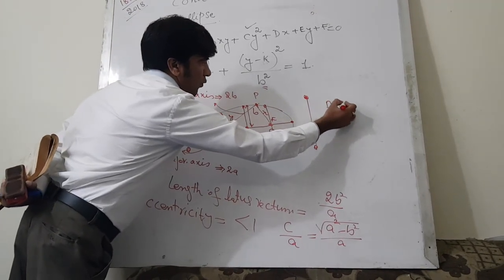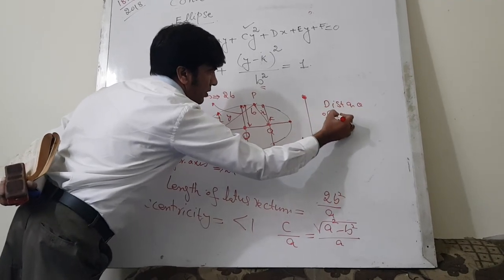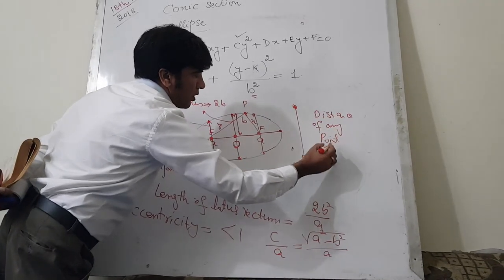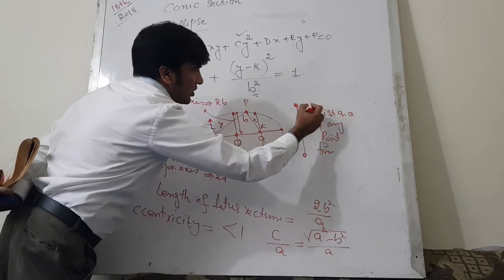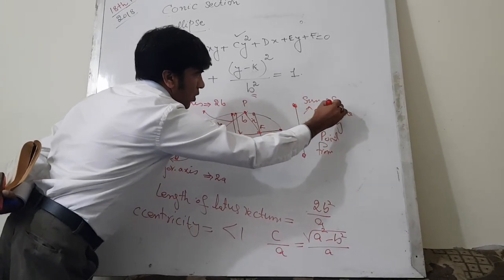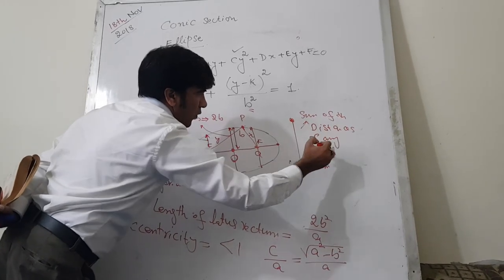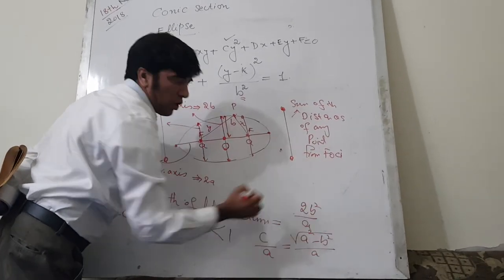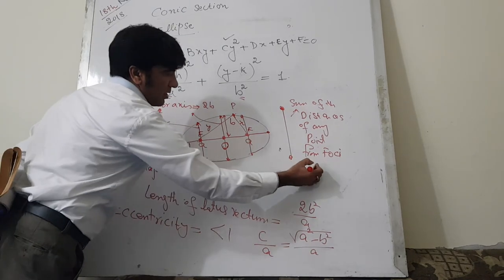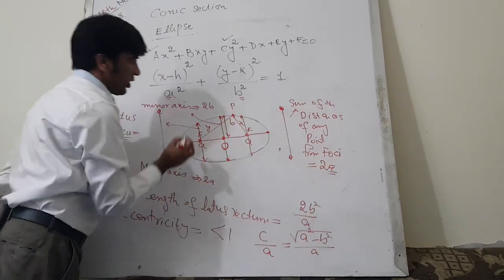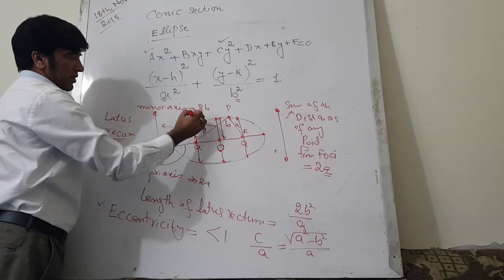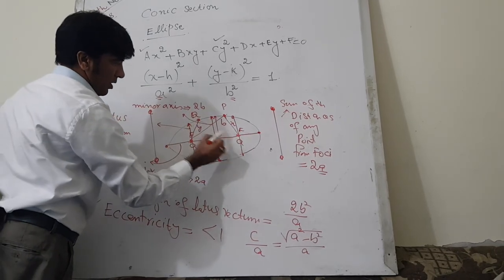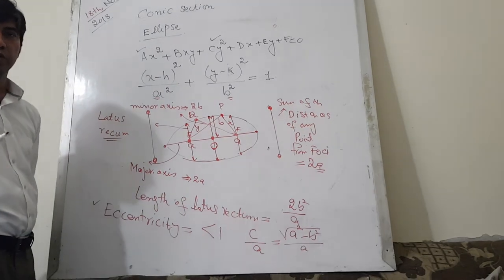The sum of the distance of any point from foci is always constant, and that is equal to 2a. Either you take any other point, let's say this is point q, the distance of this q from this and from the other focal point would also be equal to 2a.